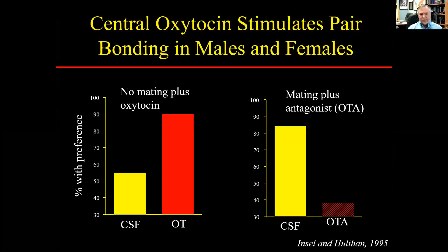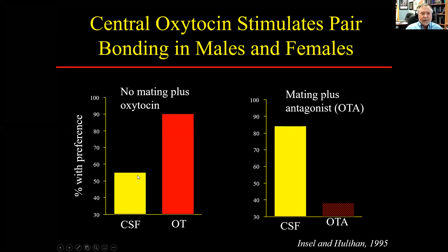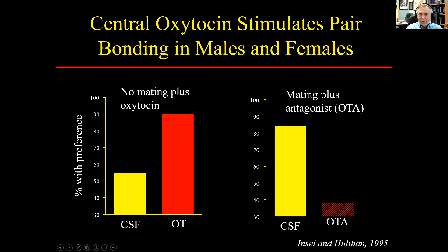The first mechanisms discovered were found by Sue Carter and Tom Insel. Since oxytocin is involved in mother-infant bonding, maybe oxytocin is involved in pair bonding. They cannulated animals — because oxytocin doesn't cross the blood-brain barrier — and gave them either CSF or oxytocin, allowing them to cohabitate for six hours. Animals that received oxytocin showed a partner preference. And if you block oxytocin receptors with an antagonist and let animals mate, blocking the receptors prevents bond formation.